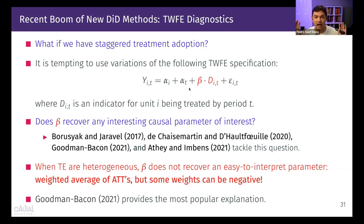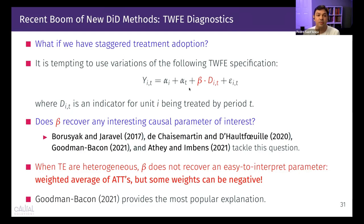Because of this, everybody who did DiD until five years ago used these regressions, and these regressions are not really reliable because we were not interpreting the results appropriately. The most popular explanation so far is the one given by Andrew Goodman-Bacon — his paper has around 3,000 citations. We'll dig into his explanation to understand how the problem of negative weights appears.